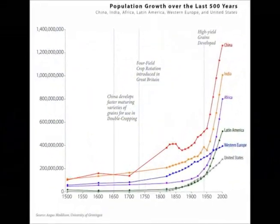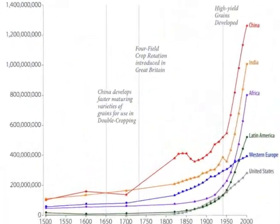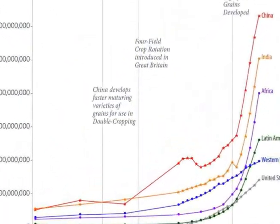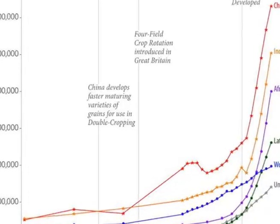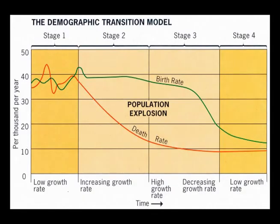So if population has such a big effect, can we predict changes in population growth in order to prepare for them? All countries tend to experience similar changes to their population over time and as they develop. While not all countries follow the pattern exactly, the demographic transition model is a useful tool for analyzing a country's population and development.